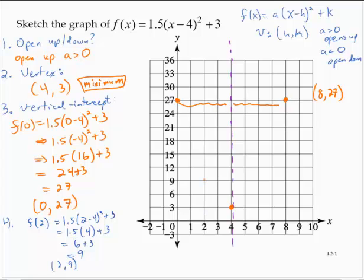Plotting the point (2, 9) and its symmetric point (6, 9). That helps me fill it in a little bit more. And so I can draw a rough sketch of this curve here. And so it's going to look something like this.